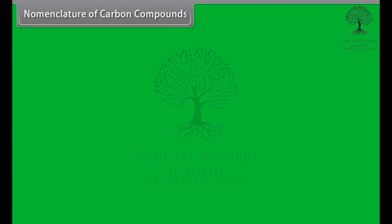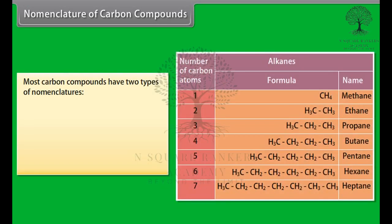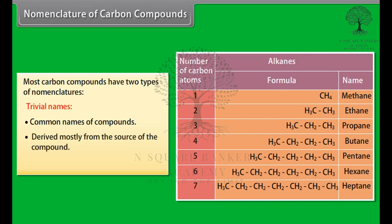Nomenclature of carbon compounds. The system of assigning a proper name to a particular carbon compound is called nomenclature. Most carbon compounds have two types of names. Trivial names are the commonly used names of carbon compounds. These are derived mostly from the source of the compound. However, names formed using this manner is ambiguous and repeating.